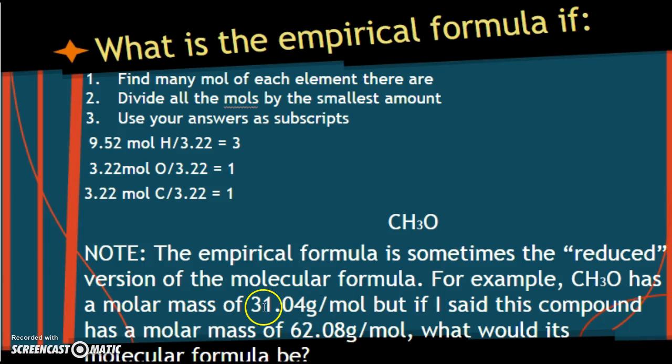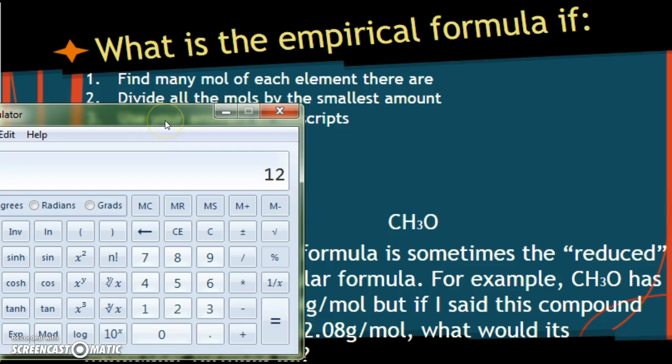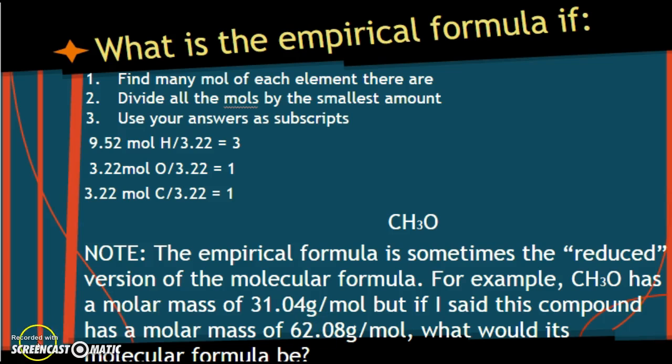When you do that, you get 12.01 for the carbon, and you get plus 1.01 for 1 hydrogen, 2 hydrogens, 3 hydrogens. And oxygen should give you 31.04 grams per mole.